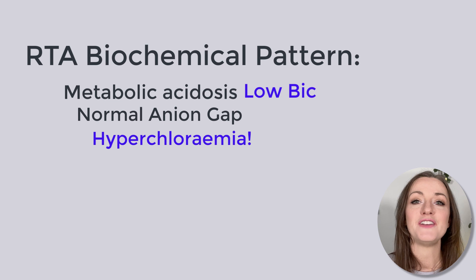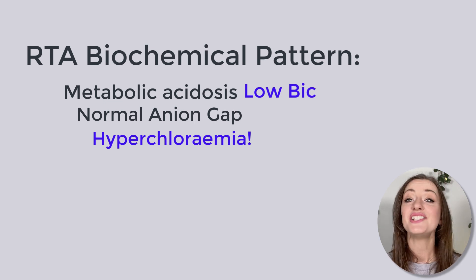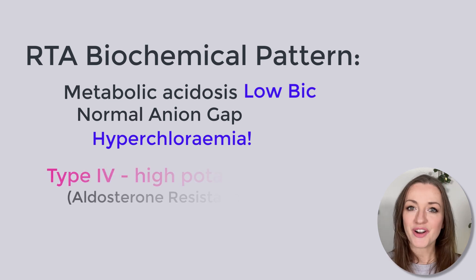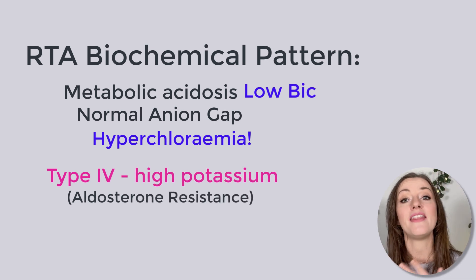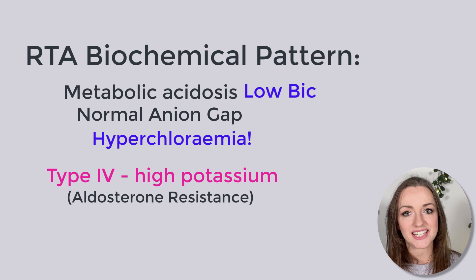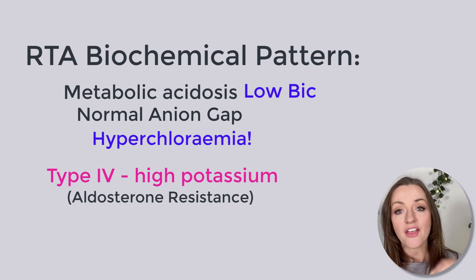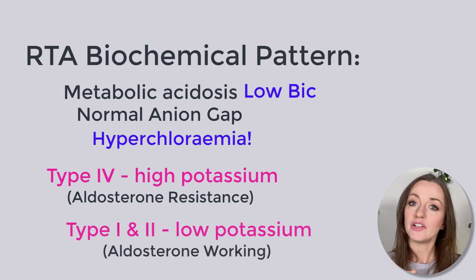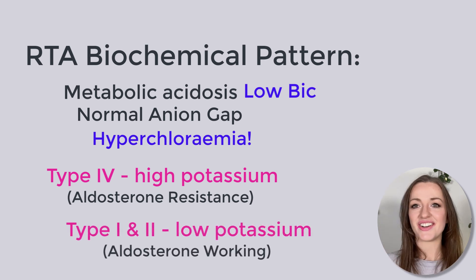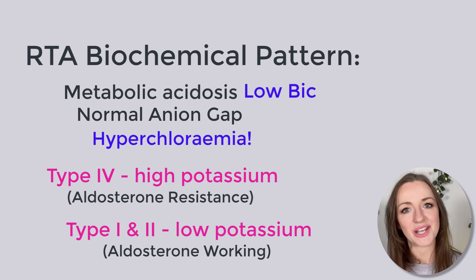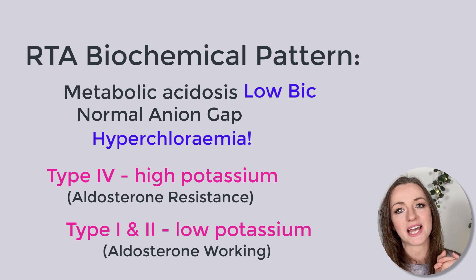The last biochemical feature to point out is potassium. Type 4 RTA is also known as hyperkalemic RTA — that's because of aldosterone resistance, and so the potassium will be high. The other types of RTA usually have a low potassium, because aldosterone is still working, trying to do its thing.